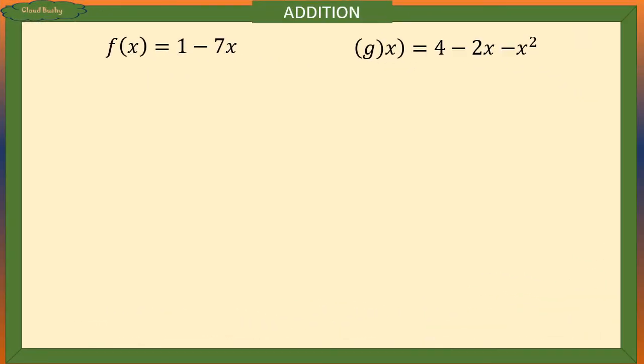So we have here two functions which are given as f of x equals 1 minus 7x and g of x equals 4 minus 2x minus x squared.